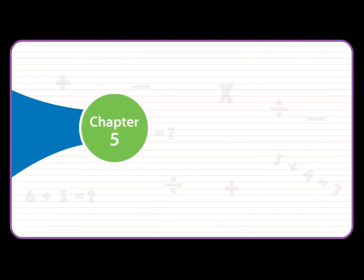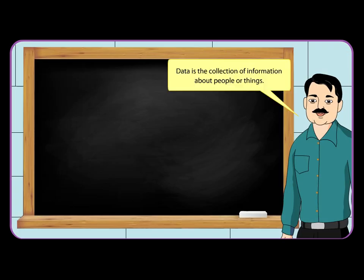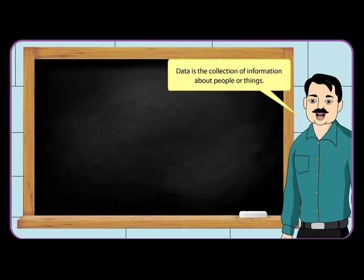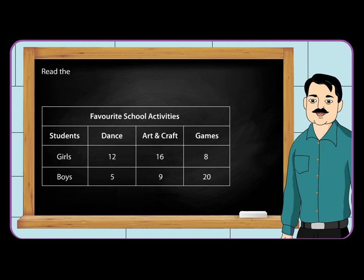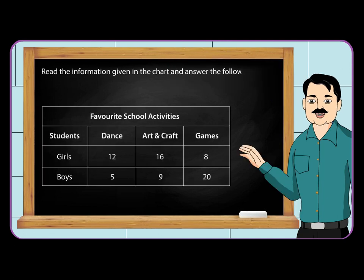Chapter 5: Data Handling. Data is the collection of information about people or things. Read the information given in the chart and answer the following questions.